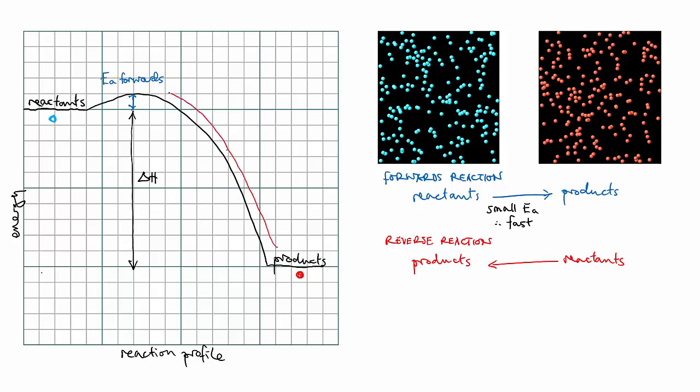To get from red to blue, a much greater activation energy has to be met. This means the reaction would be very slow, possibly so slow as to be unmeasurable.